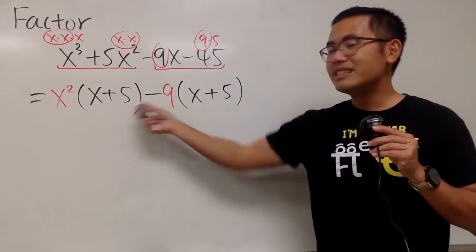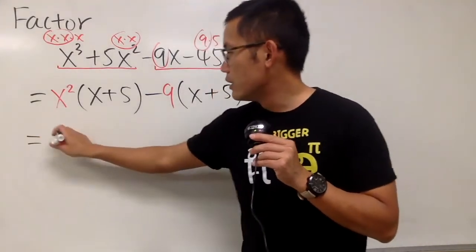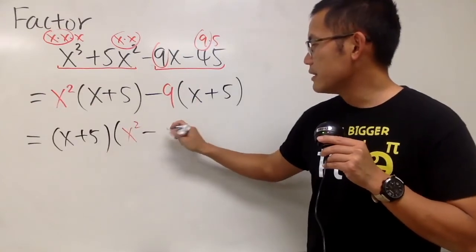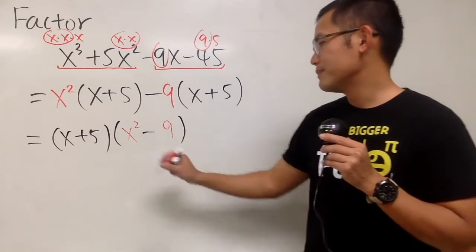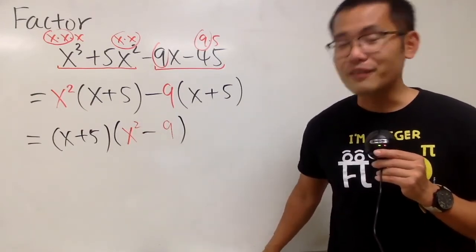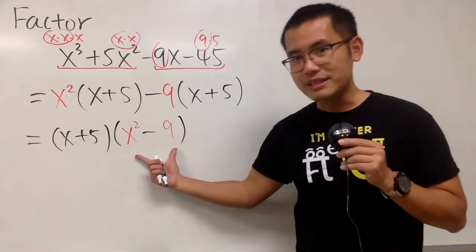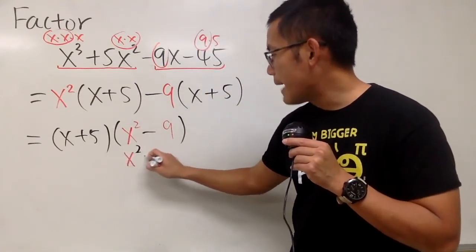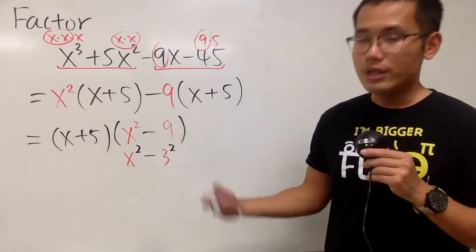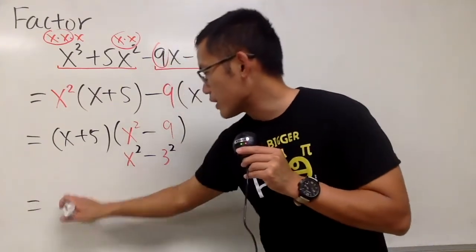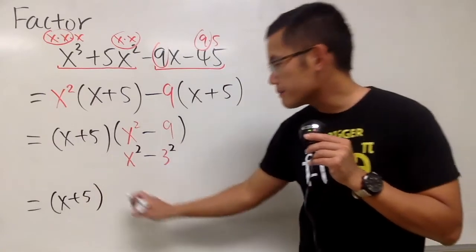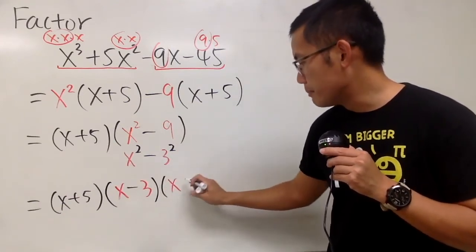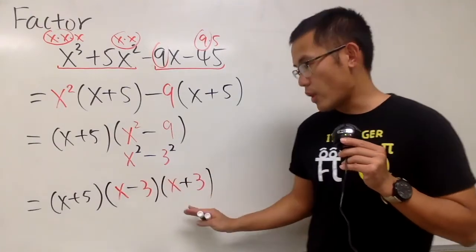This parenthesis and that parenthesis are the same, so we can factor out x plus 5. Then we have x squared minus 9. Now it seems we are done, but no — always ask yourself, can we do more? And yes, x squared minus 9 is the same as x squared minus 3 squared — a difference of two squares. So we factor it further into x minus 3 times x plus 3.